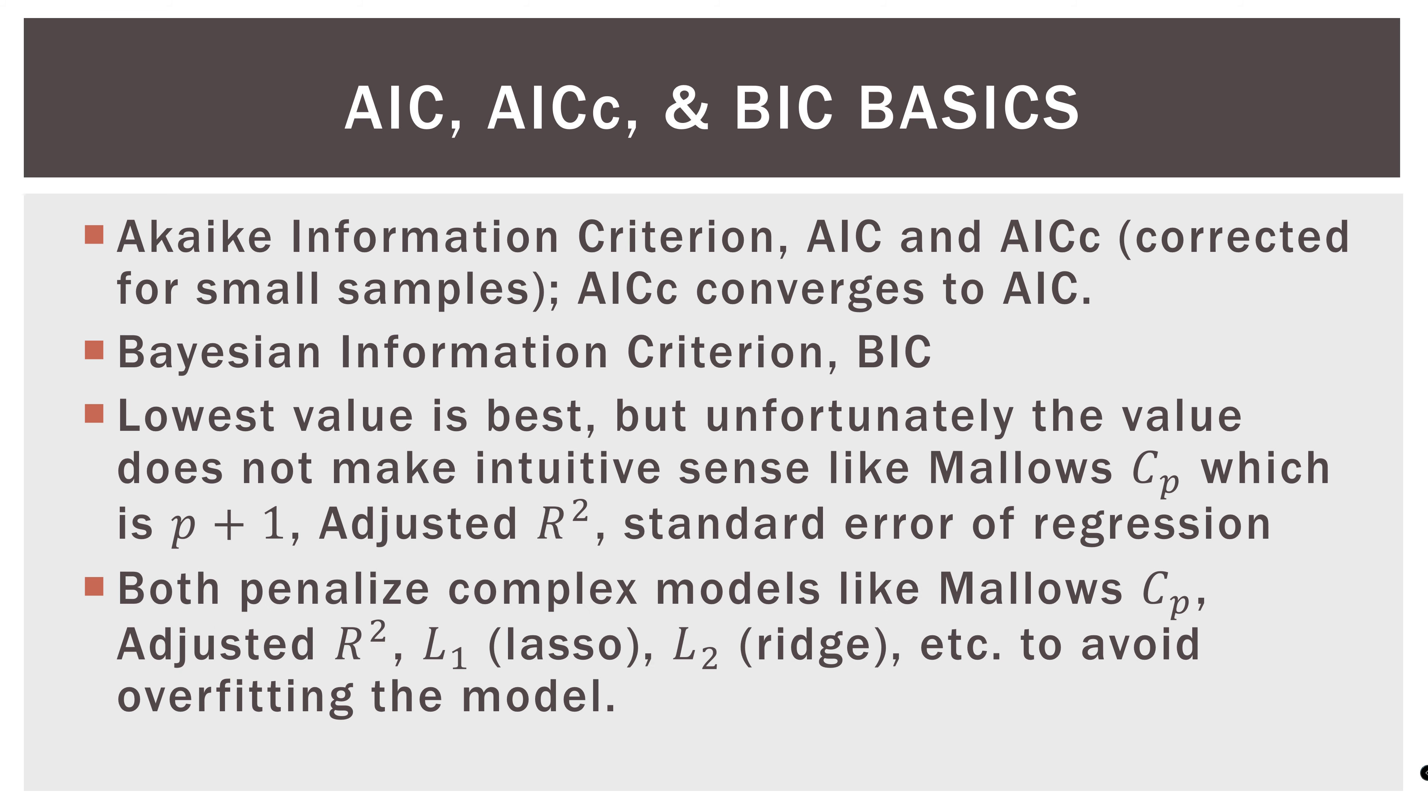Now, both the AIC and the BIC penalize complex models. And this is a pattern for all of these measures. So the AIC, the BIC, Mallows, adjusted R square, then you have like L1 and L2, which in their own way penalize complex models. And the whole idea here is to avoid overfitting the model. So as the model becomes more complex, we penalize them, each of these in their own way. We penalize those models to avoid overfitting.